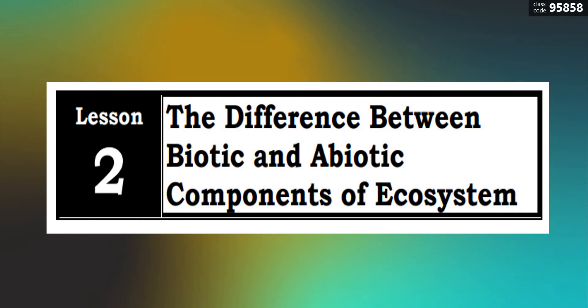For today, we're going to have the second part of Module 7, Quarter 2, Science 7, entitled Lesson 2: The Difference Between Biotic and Abiotic Components of an Ecosystem. Last time with Lesson 1, we discussed all about the meaning and importance of biotic and abiotic. But this time, let us see the difference between them.